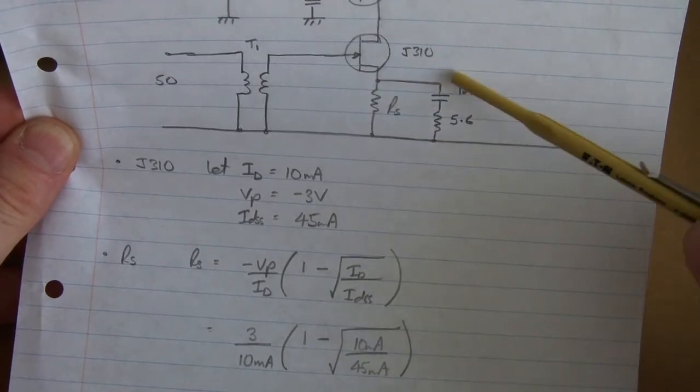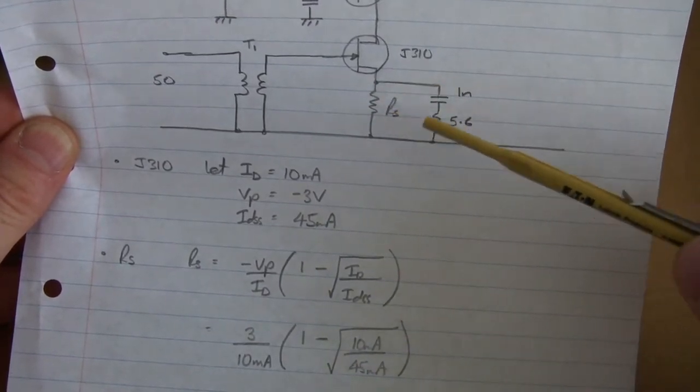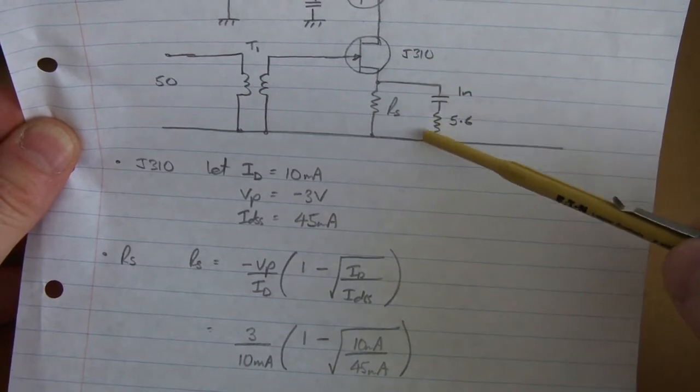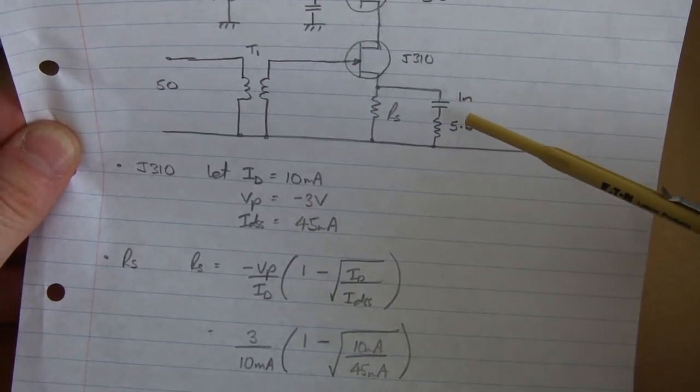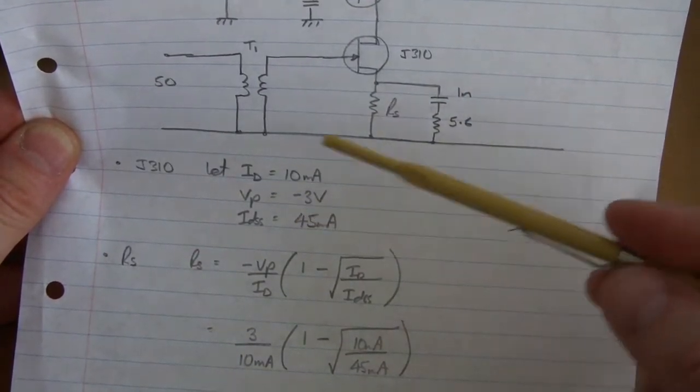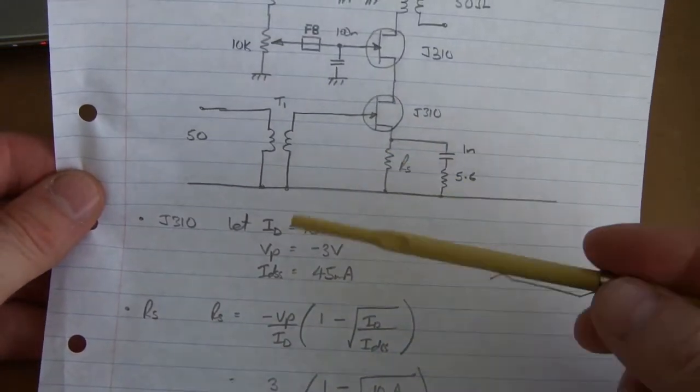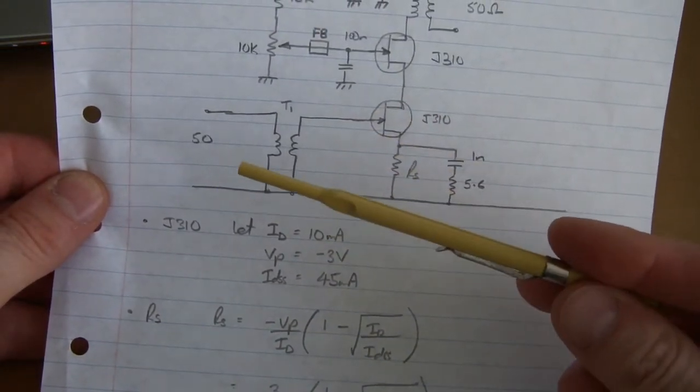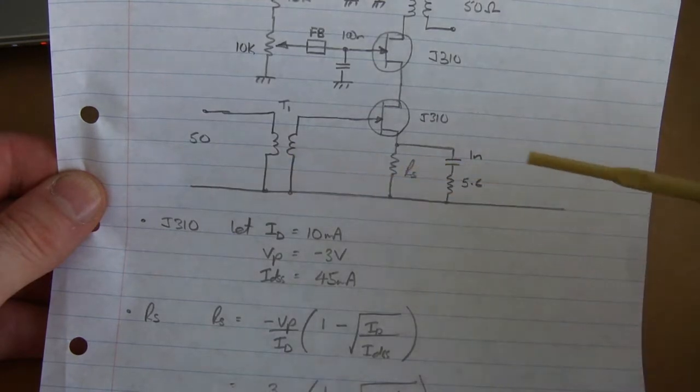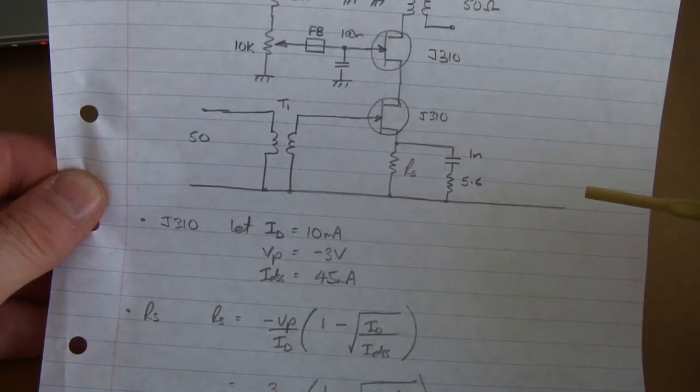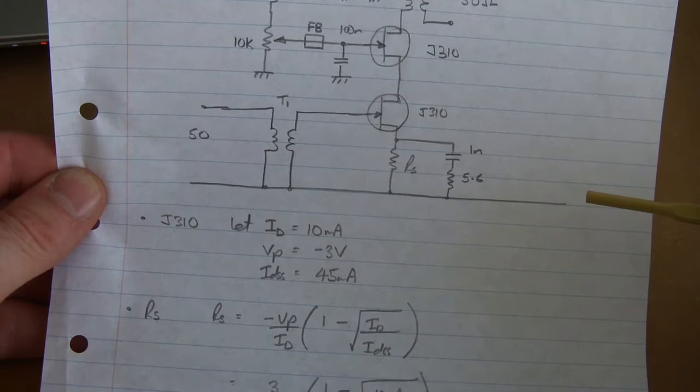This degeneration here, across that one, I used LTSpice to come up with that, to try and level the gain across from 3.5 megahertz or 80 meters, all the way through to 14 megahertz or 20 meters.